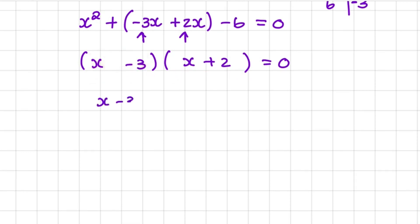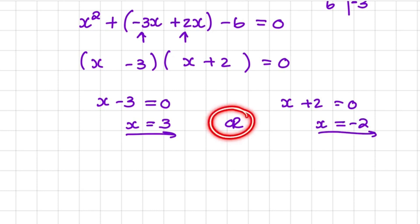We say x - 3 must equal 0, so x = 3. Or we can make the second bracket equal to 0, so x + 2 = 0, therefore x = -2. Notice that I'm using OR because if I make x equal to 3 or -2, the left-hand side will equal the right-hand side.